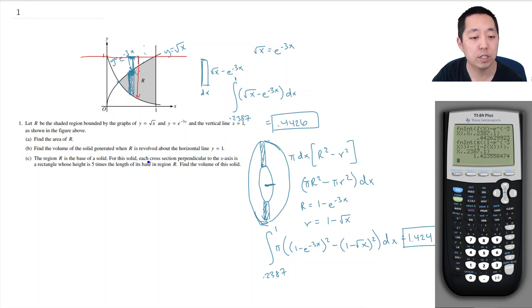The region R is the base of a solid. For this solid, each cross-sectional perpendicular to x-axis is a rectangle whose height is five times the length of its base in region R. Find the volume of this solid. So now this rectangle, this is my representative rectangle. This is dx. The length of this here is square root of x minus e to the minus three x. And then they're saying they're going to make it into a rectangle like this. So it's going to make this sort of rectangular prism. And the height here of this is five times square root of x minus e to the minus three x. So the volume of this little rectangular prism is length width height. It's five times square root of x minus e to the minus three x, so we just square it times dx. I'm going to integrate this, I'm going to add up all of these little rectangular prisms from there to there.